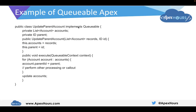Here is an example of Queueable Apex. This is the class declaration which implements the Queueable interface. These are the variables — a list of Account and an ID parentId. This is the execute method — public void execute — accepting a parameter QueueableContext. What it is doing is: for whatever list of accounts it has been passed, it loops through the list of accounts and changes the parent ID to the given parentId.